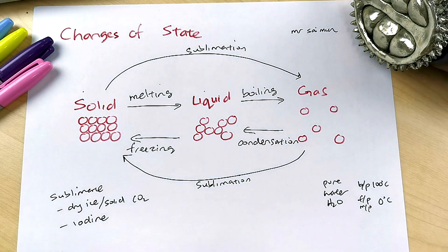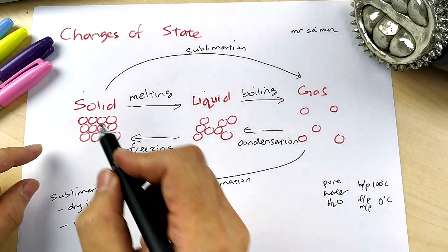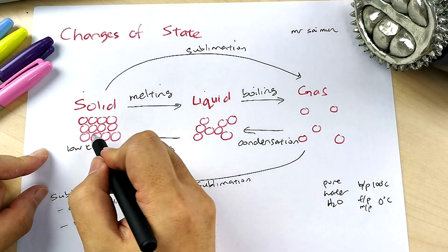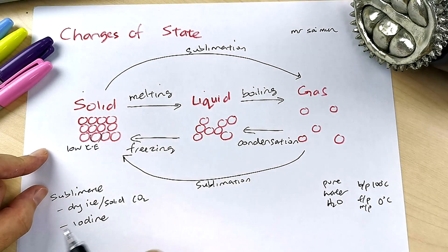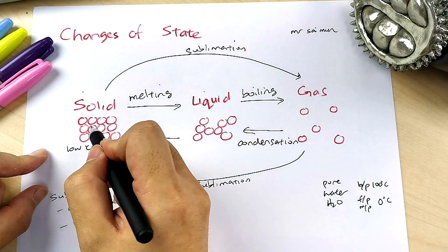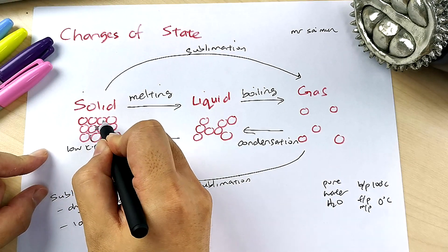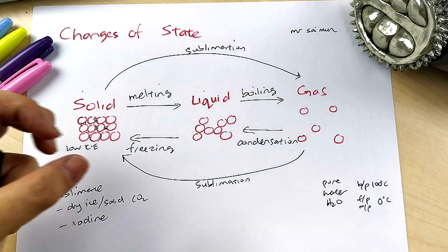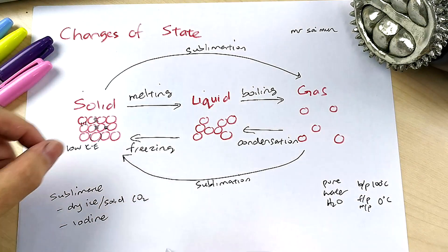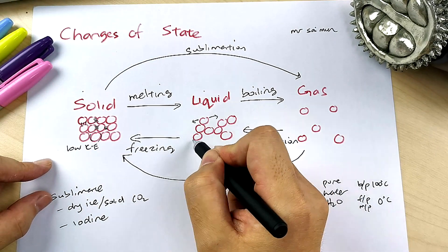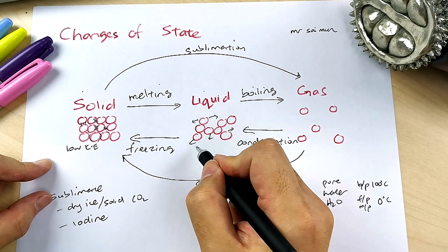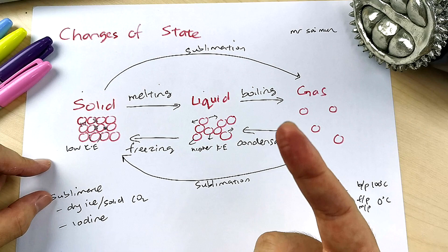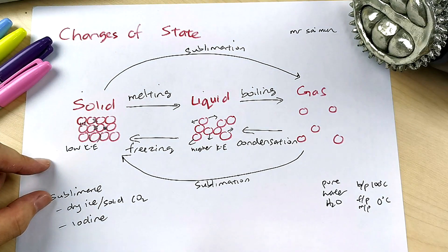Now for the kinetic theory behind these processes: solids have low kinetic energy — the particles vibrate at fixed positions and there are very strong forces of attraction. When you heat it up, the particles move faster, giving them higher or increasing kinetic energy.